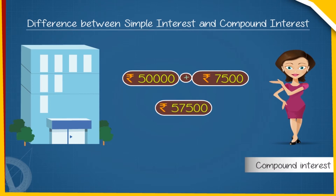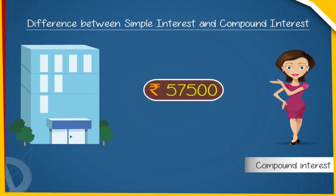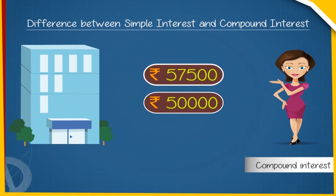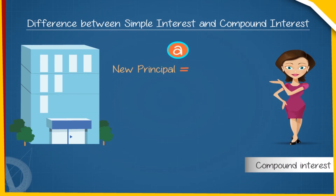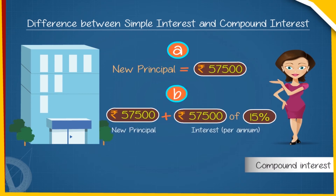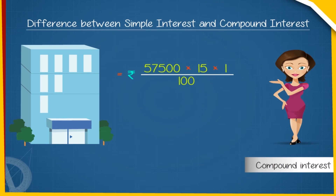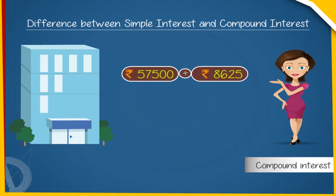If Aarti is not in a position to pay this amount to the company at the end of one year, the company will charge the interest on Rs. 57,500 thereafter. Thus, the principal for the second year would be Rs. 57,500 and not Rs. 50,000, which is the amount at the end of the first year. At the end of the second year, Aarti will pay: (A) new principal equals Rs. 57,500 and (B) interest on the new principal for one year at 15% per annum equals Rs. 57,500 into 15 into 1 upon 100 equals Rs. 8,625. Thus, total amount payable to the company equals Rs. 57,500 plus Rs. 8,625 equals Rs. 66,125.